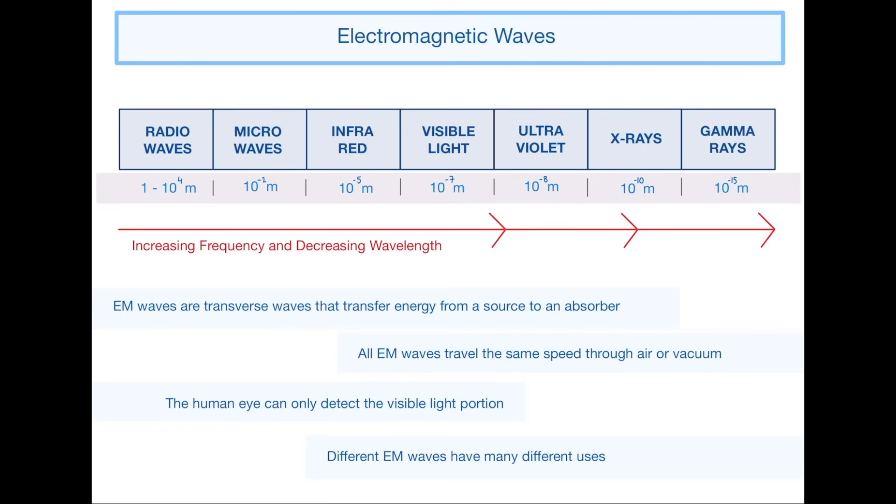EM waves are transverse waves that transfer energy from a source to an absorber. All electromagnetic waves travel the same speed through air or vacuum, and that speed is the speed of light, which is 3 × 10^8 meters per second—that's 300 million meters per second. The human eye can only detect the visible light portion, and different EM waves have many different uses, as we're going to talk about on the next slide.